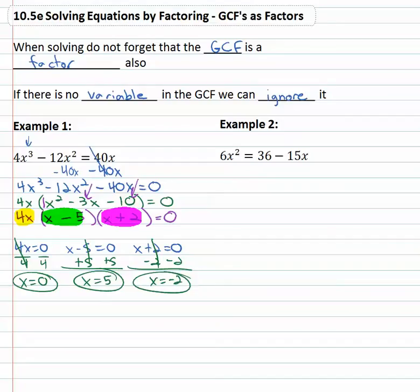So our solutions for this one are zero, five and negative two. We have three solutions here because the GCF is also a factor and must also be set equal to zero.